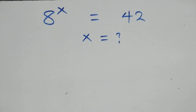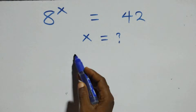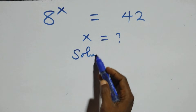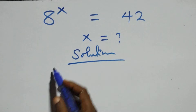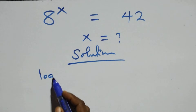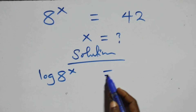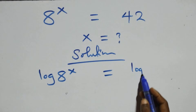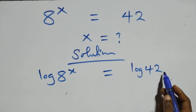Hello, you are welcome. How to solve this nice exponential equation. What we have here: we take the log on both sides, so we have log of 8 raised to power x equals to log 42 on this side.